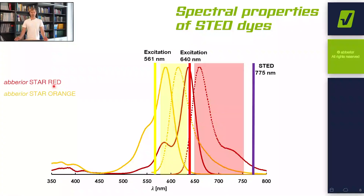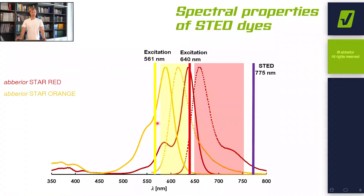First, we can use Star Red, which has an absorption maximum at roughly 635 nm — easily excitable with a 640 nm excitation laser — and the photons can be nicely detected in this detection window. This fluorophore works very well in combination with a 775 nm STED laser. As a second color, we normally choose Star Orange, which is excitable with a 461 nm excitation laser. With a second detection window, we can separate this orange dye from the red dye.